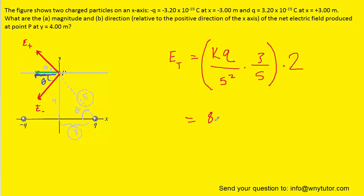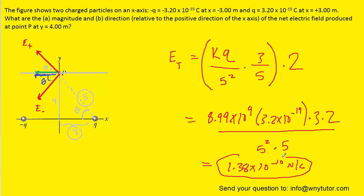So now we can plug in the known values. The constant is 8.99 times 10 to the ninth. The charge was given to us as 3.2 times 10 to the negative 19th. And then we have the rest of the constants. And then once we plug this into our calculators, we should get 1.38 times 10 to the negative 10 newtons per coulomb. This would be the magnitude of the total electric field at point P. So that's the answer to part A.